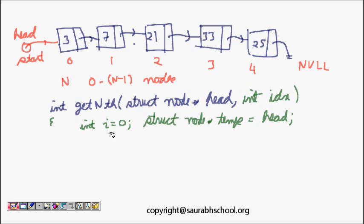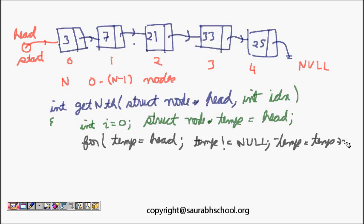Next we have to traverse, so we will apply a loop. Let's try a for loop this time. For temp equals head, temp not equal to NULL, temp equals temp next. This is a very precise way of writing using a for loop. Temp is equal to head, so I define temp here and make it equal to head. And then while temp is not equal to NULL, I do temp equals temp next.